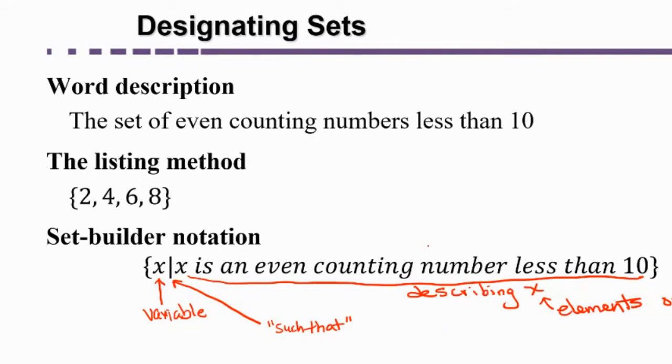Sometimes it'll be like an inequality, x is less than 10 or something like that. There are some situations where you cannot use the listing method, and so you have to use set-builder notation.